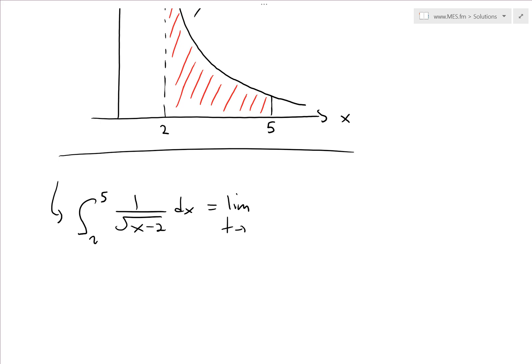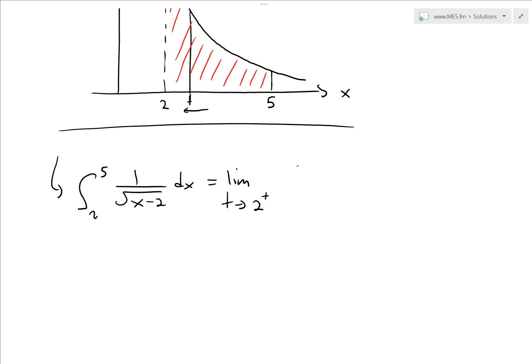The plus means from the right side, so we're approaching from here. We put a t value here, and as this approaches 2 from the right side, we now just put the integral from t to 5.